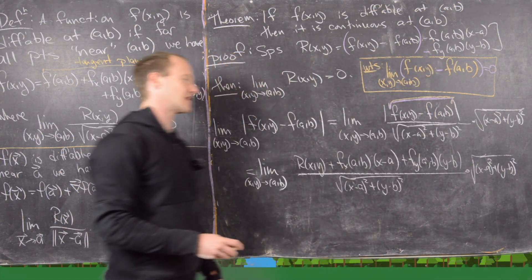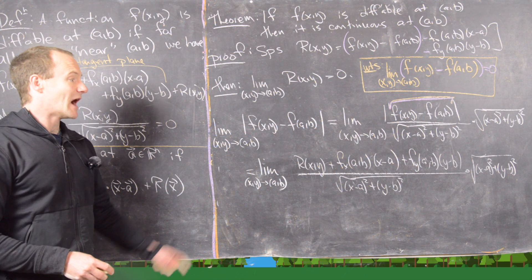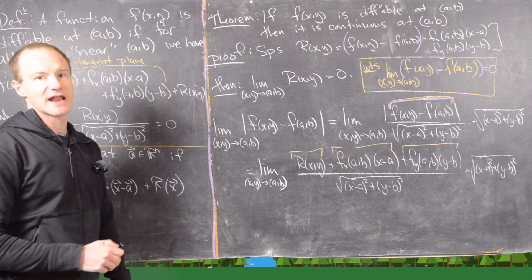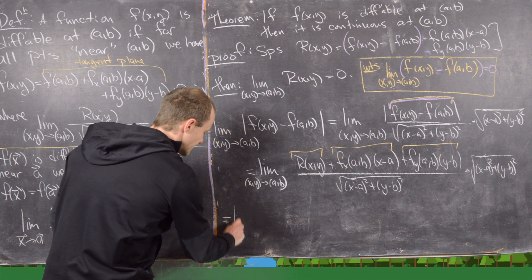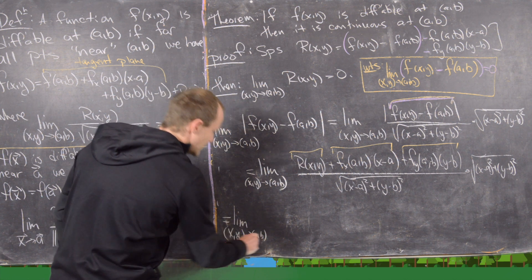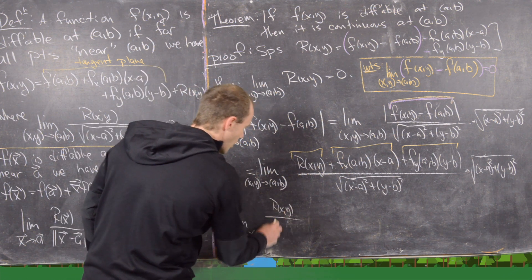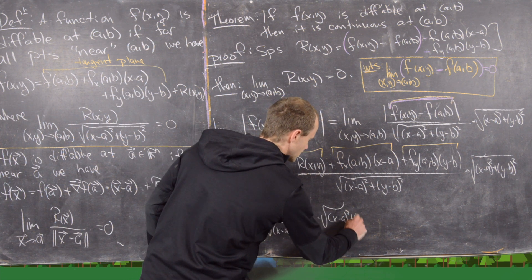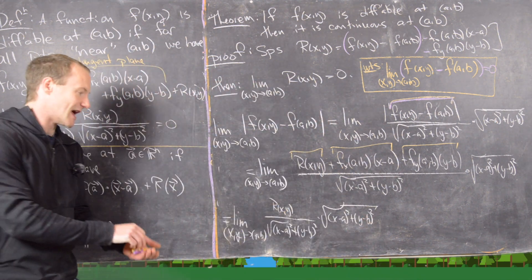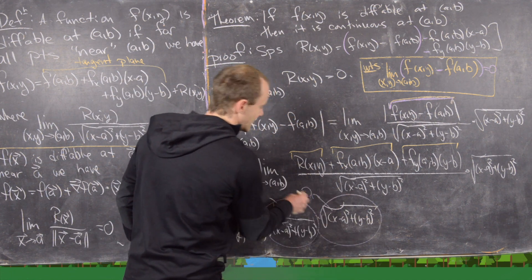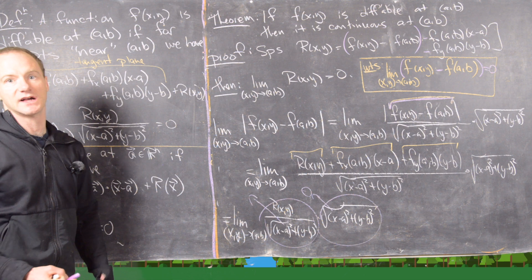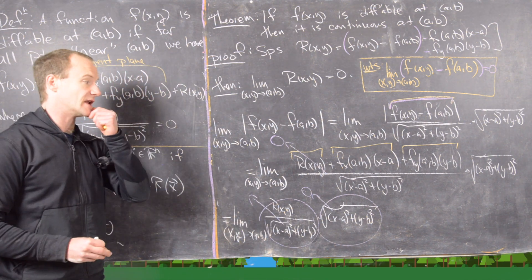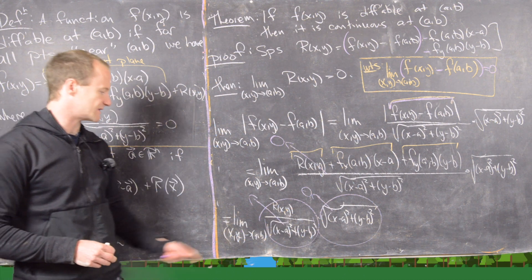Now I'm going to break this limit into three fractions based on each term and see what happens to each one. For the term with r(x,y) first: we get the limit of r(x,y) over √((x−a)²+(y−b)²) times √((x−a)²+(y−b)²). The first factor tends to zero by differentiability, and the second factor also tends to zero, so we have zero times zero — everything associated with the remainder term approaches zero.